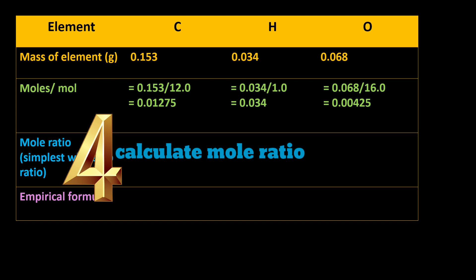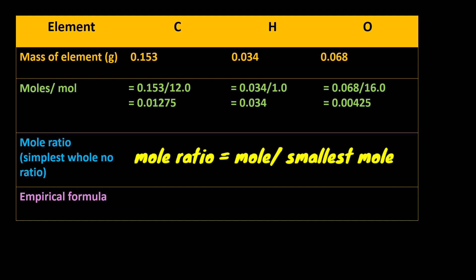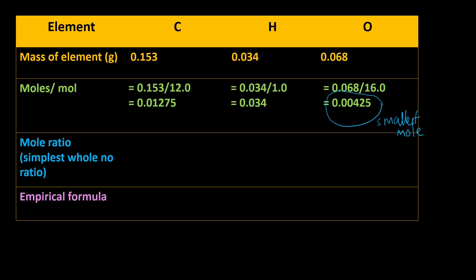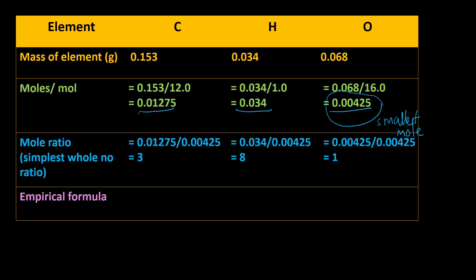Step 4: calculate the mole ratio by dividing each moles value by the smallest mole. The smallest mole from Step 3 is 0.00425. For carbon: 0.01275 ÷ 0.00425 = 3. For hydrogen: 0.034 ÷ 0.00425 = 8. For oxygen: 0.00425 ÷ 0.00425 = 1.